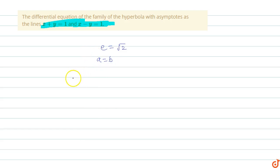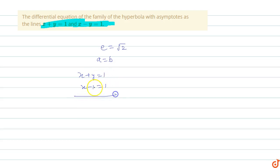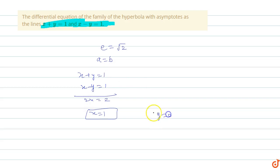The asymptote equations are x + y = 1 and x - y = 1. Adding these two equations: 2x = 2, so x = 1. Putting x = 1 gives y = 0. So solving these equations, the center is at (1, 0). The eccentricity of a rectangular hyperbola is √2 and a equals b.